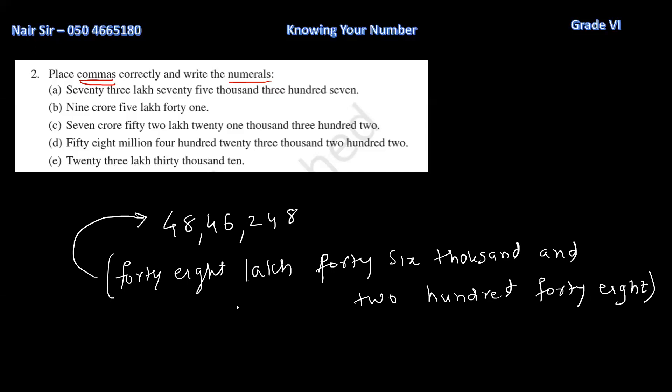48 lakhs. In lakh, how many zeros are there? Look at this. 1, 0, 2, 0, 3, 0, 4, 0, 5, 0. So, if I want to write 48 lakhs, can I write like this? Is this 48 lakh? Yes.